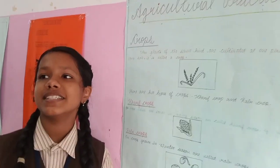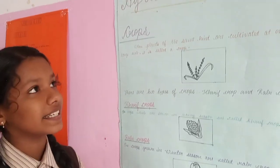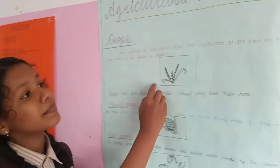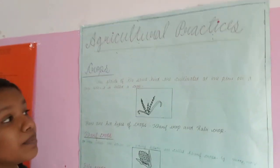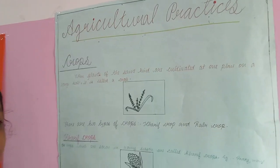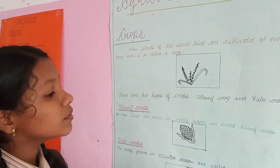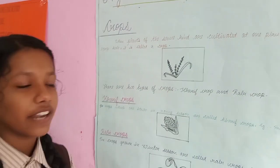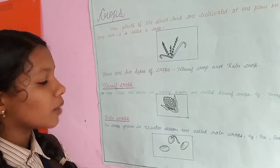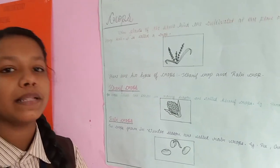Hi everyone. I am Zunia Sarabaji from A3. Today I am going to explain about agricultural plant practices. The first topic is crops. When plants of the same kind are cultivated at one place on a larger scale, it is called a crop. There are two types of crops: kharif crops and rabi crops. Kharif crops are grown in the summer season; for example, paddy and peas. Rabi crops are grown in the winter season; for example, wheat.